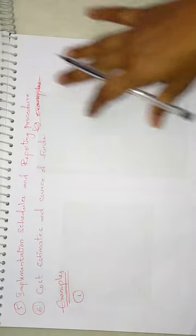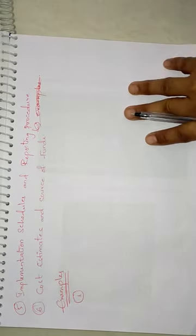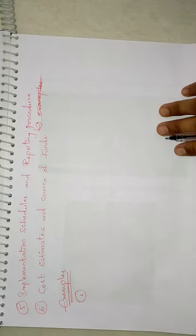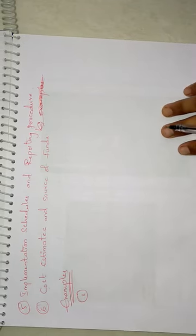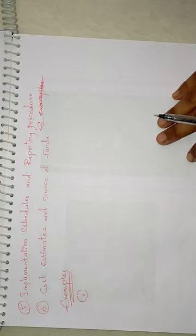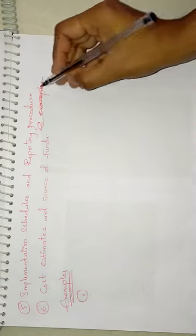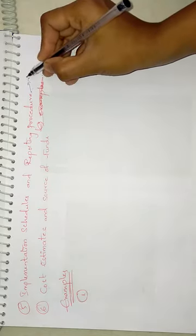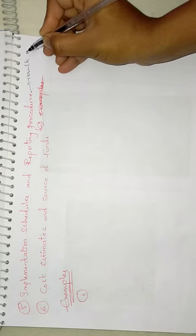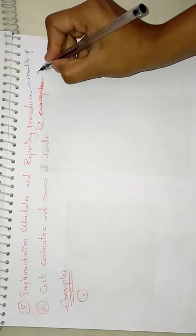The fifth component is implementation schedules and reporting process. This component includes information about the progress and results of the mitigation and monitoring measures, as well as reporting on the outcomes of previous steps.